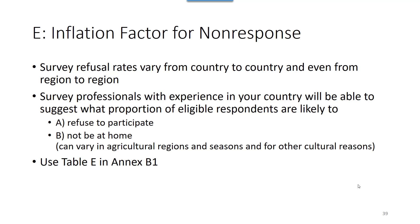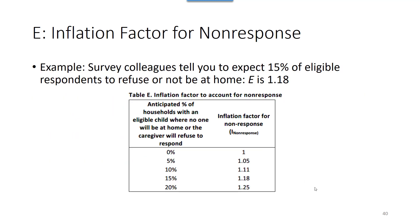When you learn what the likely non-response rate or response rate is, you can use Table E in Annex B1 to calculate the inflation factor. Here we are showing you Table E from Annex B1. If survey colleagues told you to expect 15% of eligible respondents to either refuse or not be at home, we would look at the row in Table E for 15% and find that the inflation factor — value E — is 1.18.